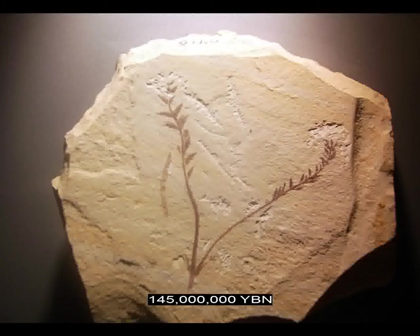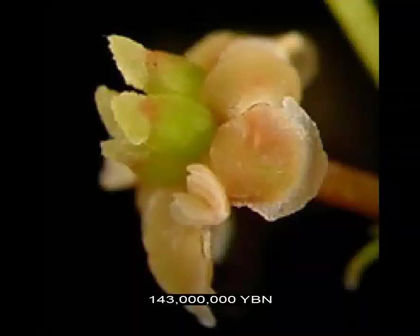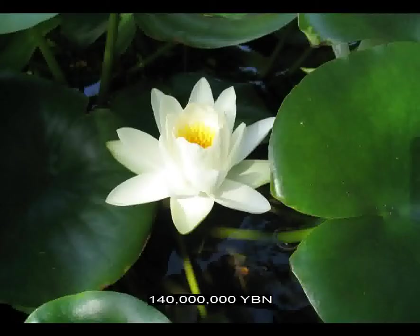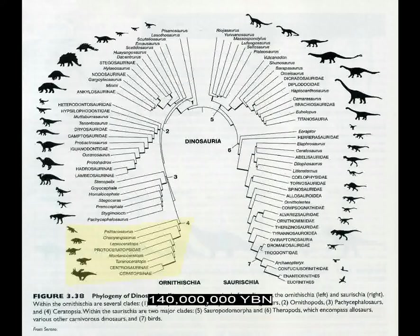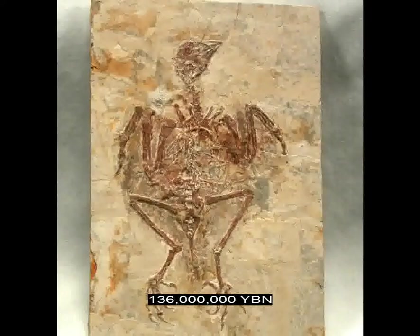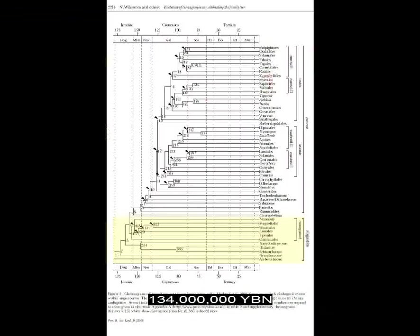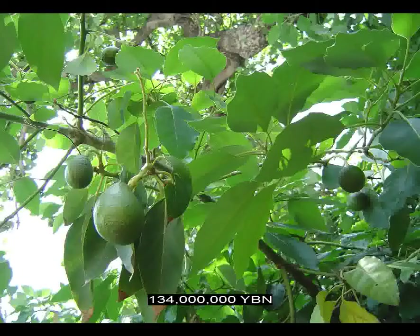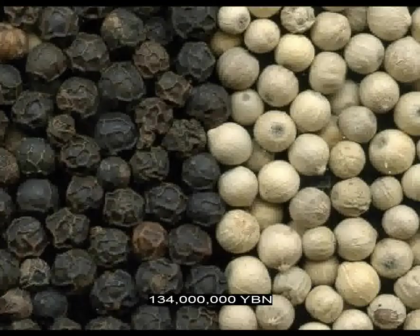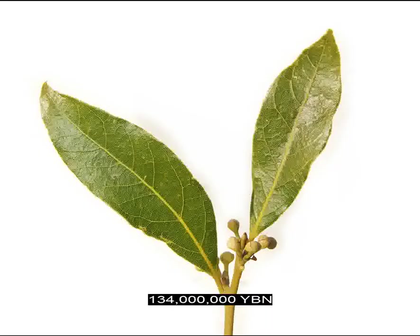End of the Jurassic and start of the Cretaceous period. Earliest extant flower — Amborella. Flowers Nymphaeales — water lilies. The Ornithischian Ceratopsian dinosaurs evolve — ancestor of Triceratops. Enantiornithes evolve — early birds. Flowers Magnoliales evolve — ancestor of nutmeg, avocado, sassafras, cinnamon, black and white pepper, camphor, bay or laurel tree, and magnolia. Flowers eudicots evolve — the largest lineage of flowers. The two main groups of the eudicots are the rosids and the asterids.